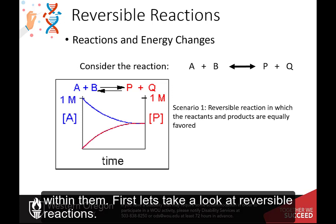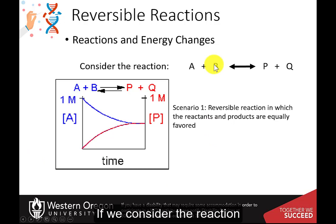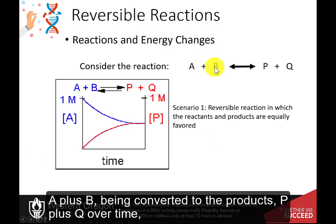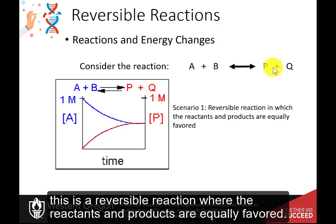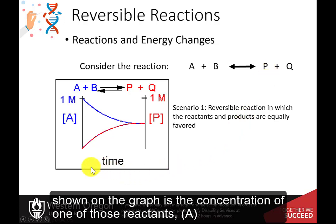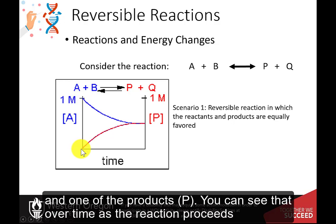First, let's take a look at reversible reactions. If we consider the reaction A plus B being converted to the products P plus Q over time, we can imagine a few different scenarios. In this first scenario shown here, this is a reversible reaction where the reactants and products are equally favored. Shown on the graph is the concentration of one of those reactants, A, and one of the products, P.